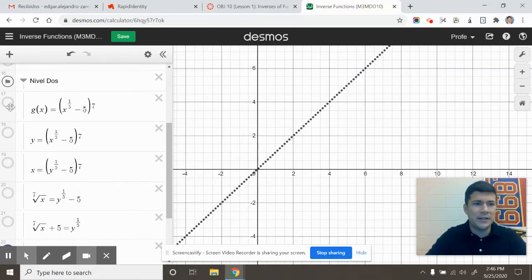All right, let's look at a couple more complex examples. So here's a function that I cannot even see its graph because it's probably so humongous. All right, so this is x to the one-fifth minus five quantity raised to the seventh power. So let's get right to it.